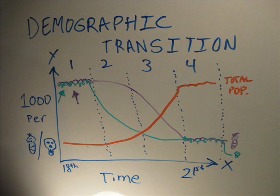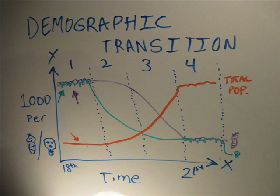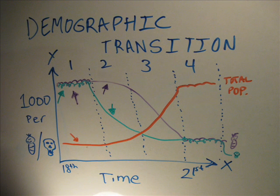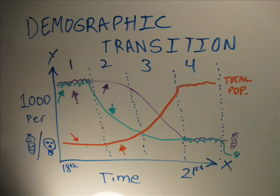Stage 1: Low growth. High birth rate and high death rate lead to a population that varies over time, with little long-term population growth. Stage 2: High growth. High birth rate and declining death rate lead to a sustained and significant population increase.